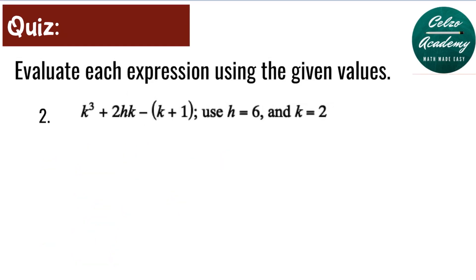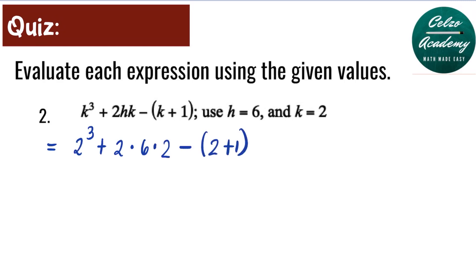Question number 2. Evaluate the expression k cubed plus 2hk minus the quantity k plus 1, using h equals 6 and k equals 2. We substitute h and k into the expression: 2 to the 3rd power plus 2 times 6 times 2, minus the quantity 2 plus 1. We begin by simplifying the parentheses: 2 plus 1 equals 3.